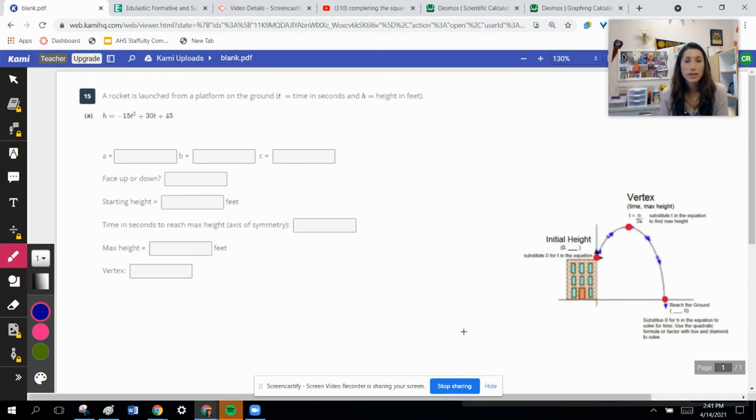All right, on number 15 we are looking at projectile motion. Remember that's just almost imagining an object that's being thrown into the air, reaching a maximum height, and then falling onto the ground. So there's a few distinct points that we might look for when looking at a projectile motion question. So we'll go through each of the scenarios of what you're looking for here.